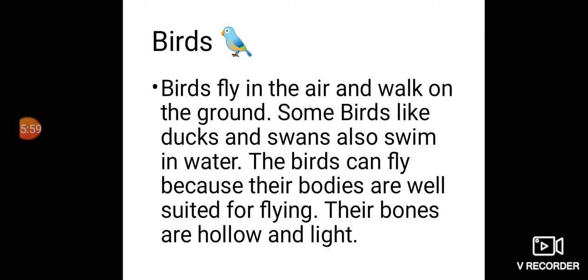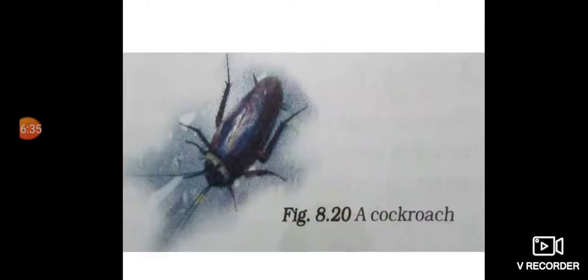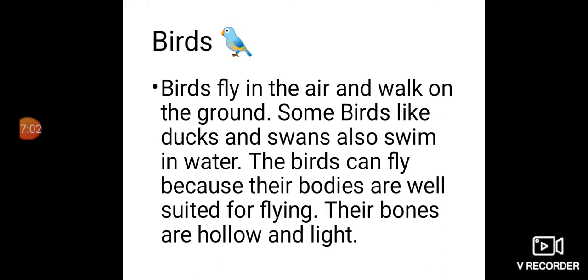To revise: cockroaches walk, climb, and fly. They have 3 pairs of legs. The body is covered with a hard outer skeleton made up of a number of plates joined together, which permits movement — walking, climbing, and flying. There are 2 pairs of wings attached to the body behind the head. Distinct muscles near the legs move the legs for walking, and body muscles move the wings when flying.